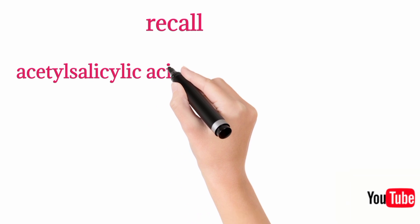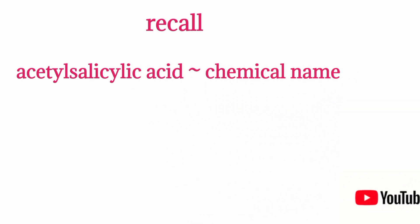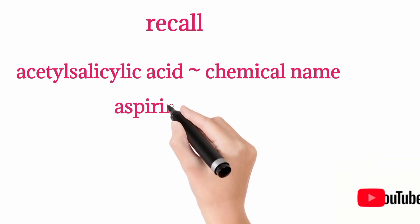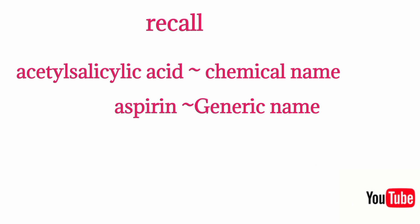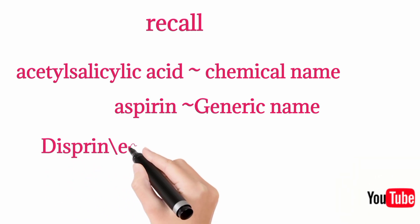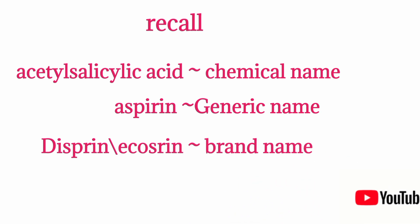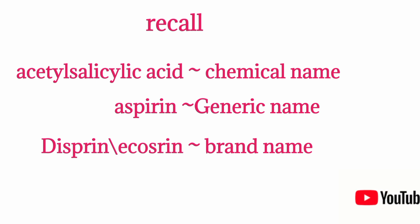To recap with aspirin as an example: acetyl salicylic acid is the chemical name, denoting the chemical structure. Aspirin is the generic name — a shorter term that can be used in prescription. Disprin and Ecosprin are both brand names; different brands have given different names, but both contain the active pharmacological ingredient, aspirin.